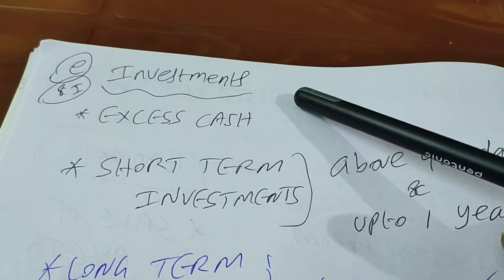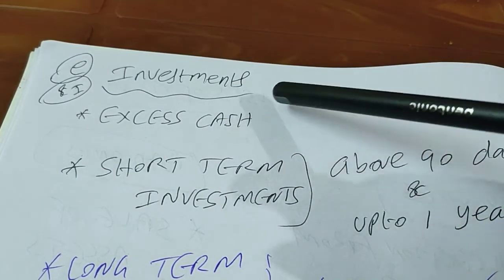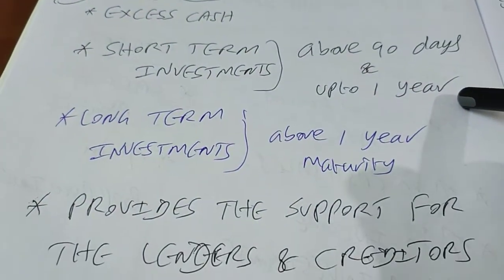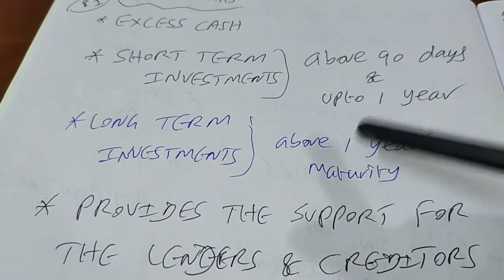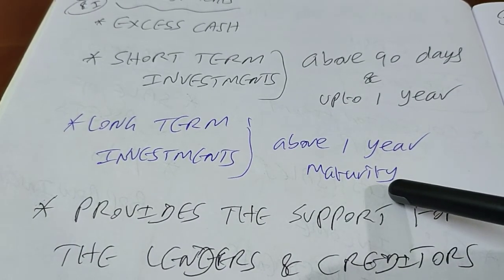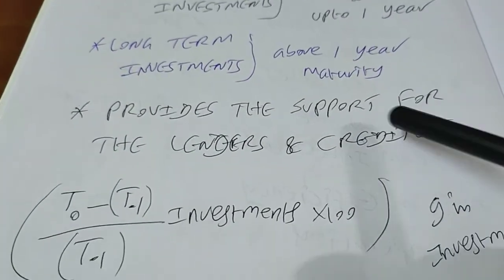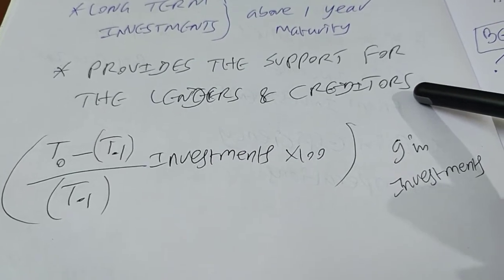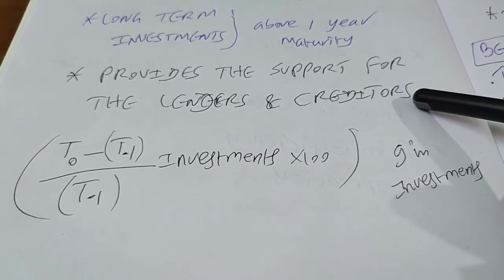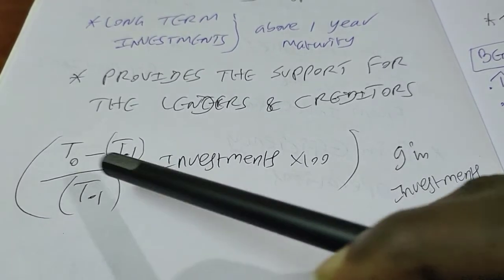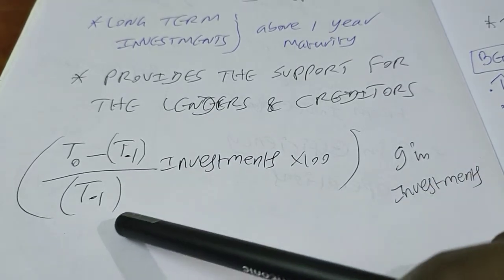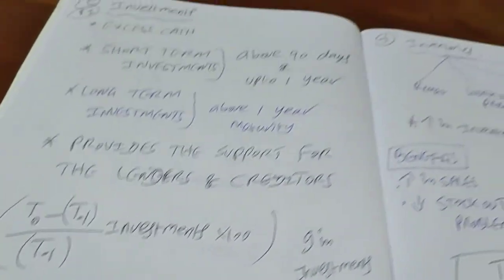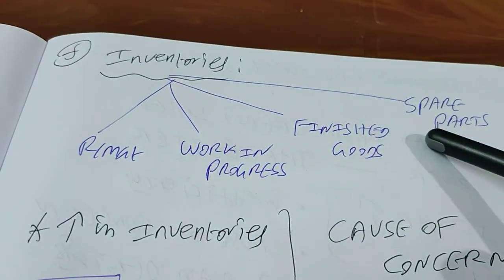Investments represent excess cash. Short-term investments have a maturity period above 90 days and up to one year; long-term investments have a maturity period above one year. Investments provide support and signal positive confidence to lenders, creditors, and investors. The growth rate in investments is: (Investments at t0 minus Investments at t-1) divided by Investments at t-1, multiplied by 100. Higher the growth rate, better the attractiveness of the firm.